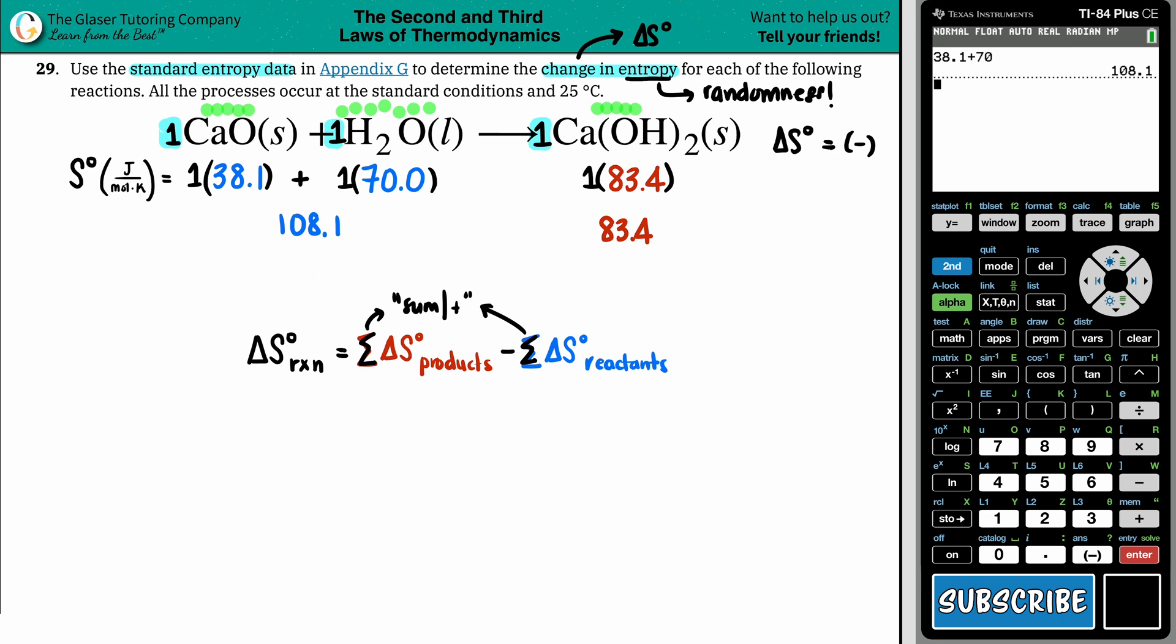Now I'm ready to plug it in. Delta S. So change in entropy for the whole entire reaction is products minus reactants, 83.4 minus the change in your reactants, which was the 108.1.